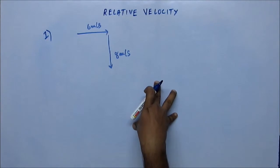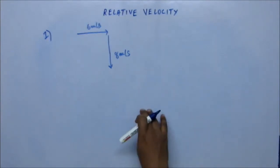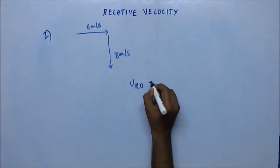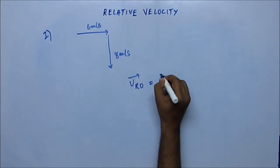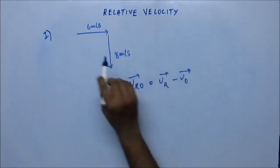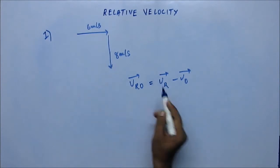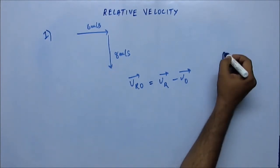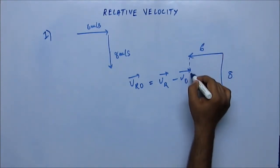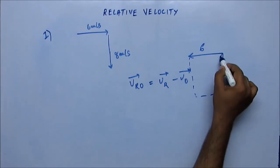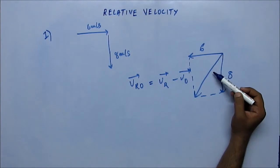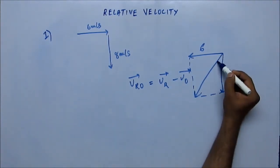Orally, no paper, no pen. You have to make the vector triangle each time you encounter such a problem. We know that the velocity of rain with respect to observer is velocity of rain minus velocity of observer. Velocity of rain is given as 8 m/s minus velocity of observer is 6 m/s on the other side. Using the parallelogram law of addition, this is the resultant vector.